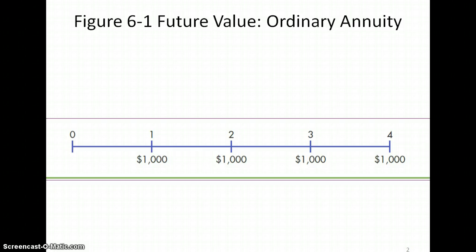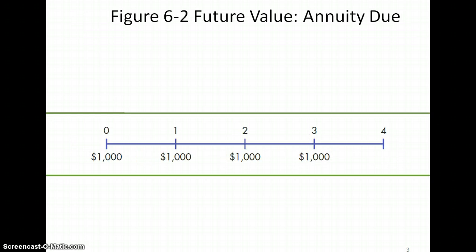For example, with this timeline, this is an ordinary annuity, so you can see at the end of the first period is when the first payment is made, the end of the second period, and so forth. For an annuity due, the payment is made at the beginning of the period, and so the second payment is at the beginning of the second period, and so forth.